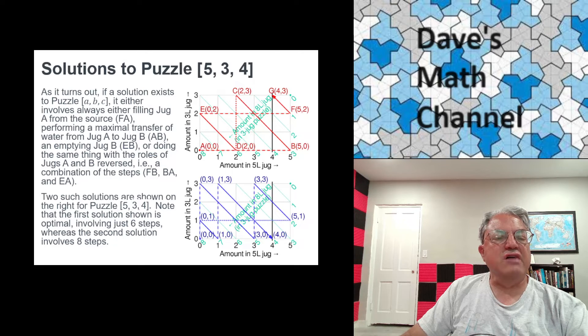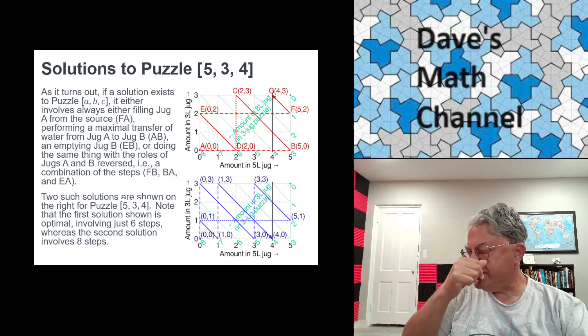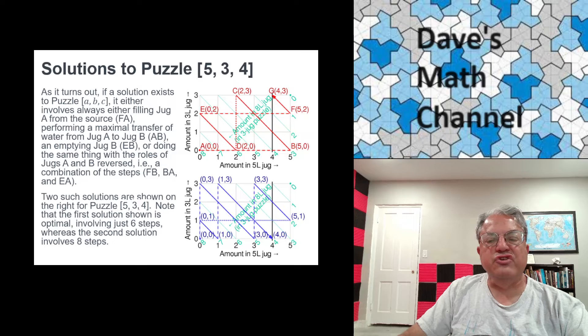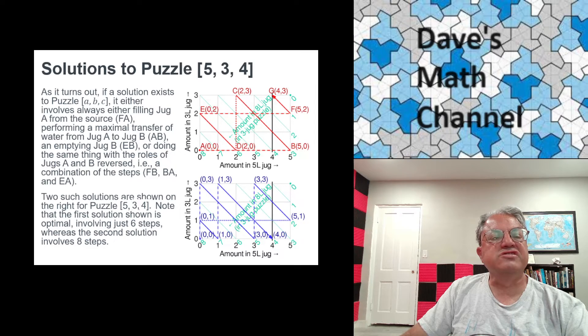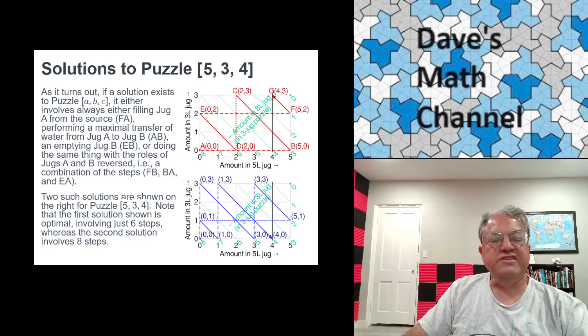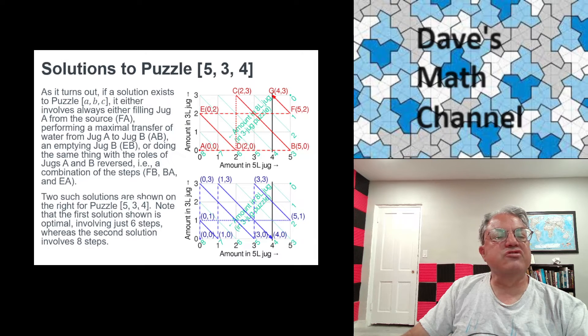So let's look at the top graph first. The top graph is actually the optimal solution. If you notice the top graph, there's exactly seven states shown on this graph, seven nodes. And it really requires six steps because A is our starting node - it's a zero comma zero. And then the ending node is G. These are in alphabetical order. So we're going from A to G. That's six steps.